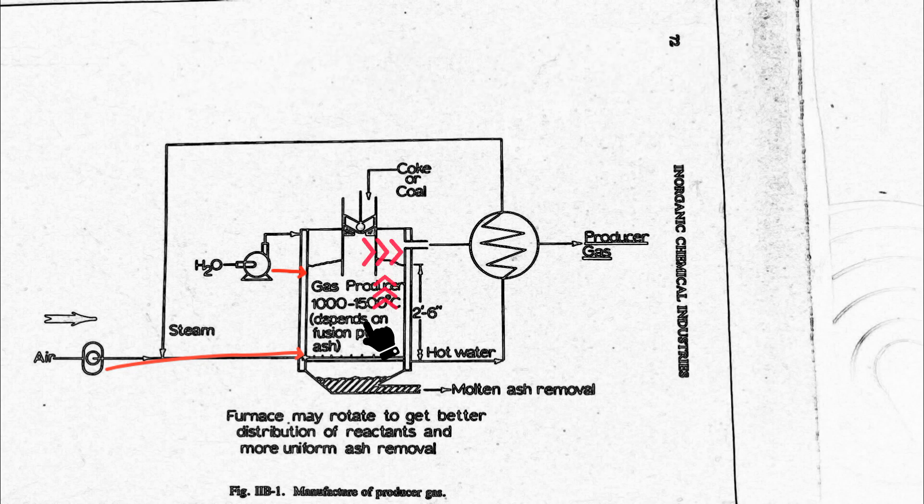Once the process is complete, producer gas is obtained from the top section with a high temperature and molten ash is obtained from the bottom section.